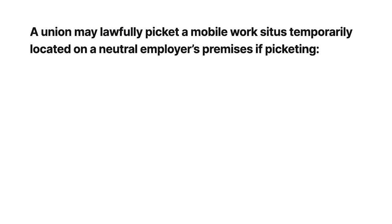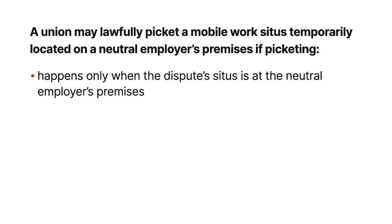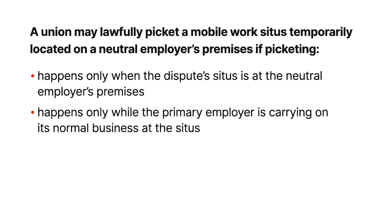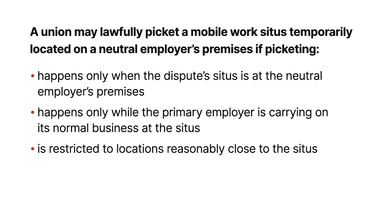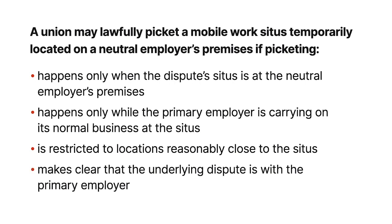the NLRB held that a union may lawfully picket a mobile work situs temporarily located on a neutral employer's premises if: the picketing happens only when the dispute situs is at the neutral employer's premises; the picketing happens only when the primary employer is carrying on its normal business at the situs; the picketing is restricted to locations reasonably close to the situs; and the picketing makes clear that the underlying dispute is with the primary employer.